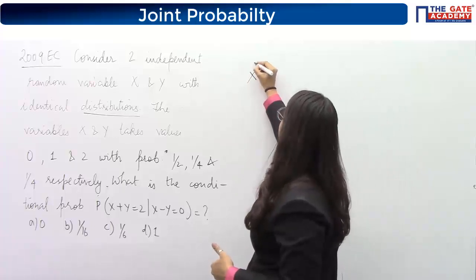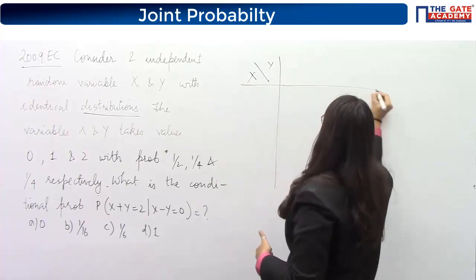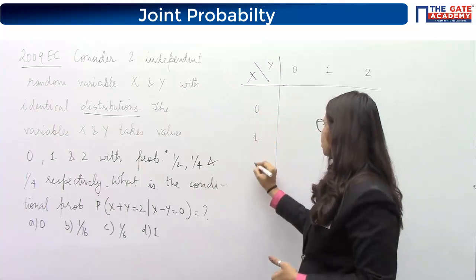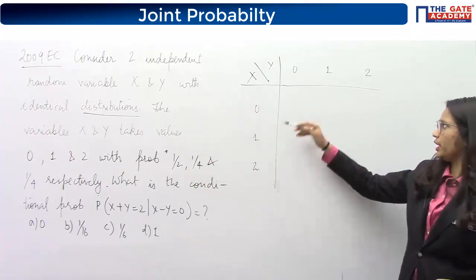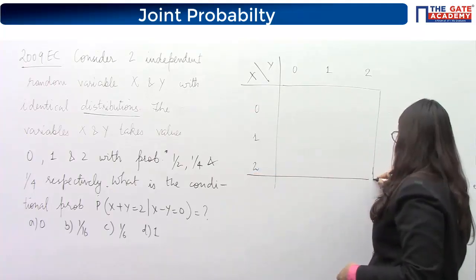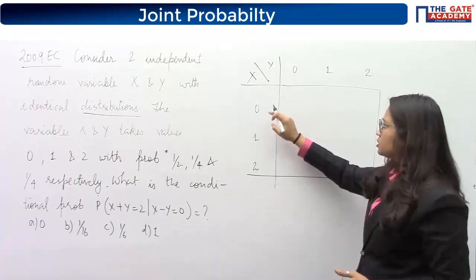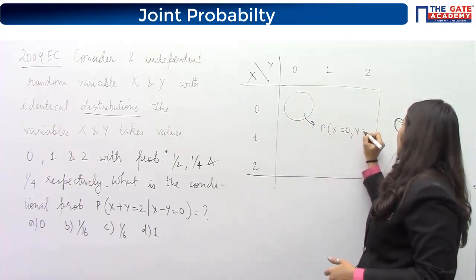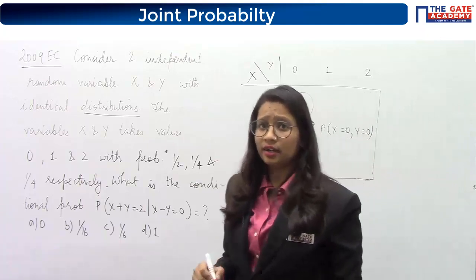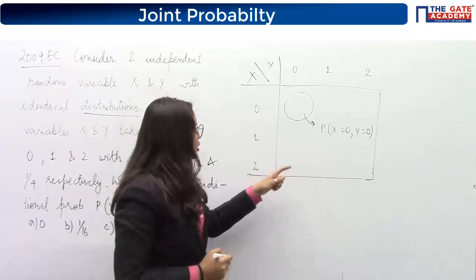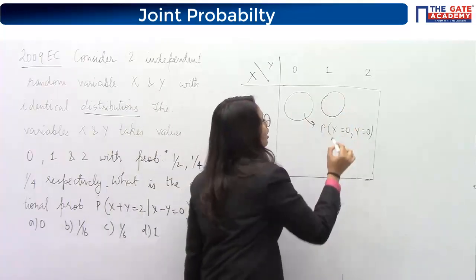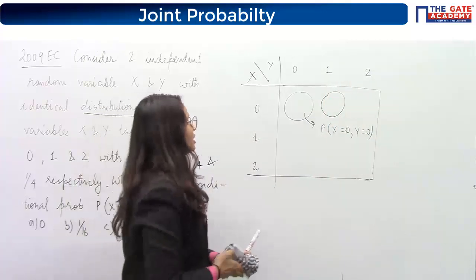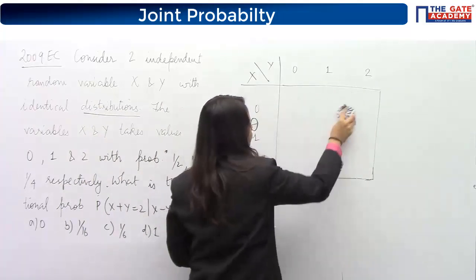Let's draw a table with possible values of X (0, 1, 2) and possible values of Y (0, 1, 2). Each cell represents the joint probability — for example, the cell for X=0 and Y=0 denotes P(X=0 and Y=0). Similarly, another cell denotes P(X=0, Y=1), and so on. This is how you read this joint probability table.